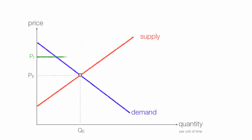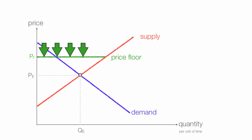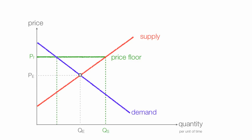Now I'll draw in a price floor — this is a price the government doesn't allow to drop below. With a price floor, the quantity supplied is there and the quantity demanded is here, so we see quantity supplied is greater than quantity demanded.